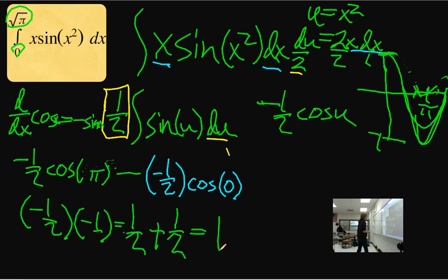So overall, if you want to define the integral of x sine of x squared from zero to square root of pi, the answer is one. And that should be it.